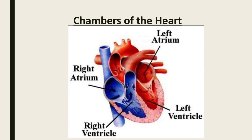Dear students, let's learn the chambers of the heart. The heart consists of four chambers. They are upper two auricles and lower two ventricles. They are right auricle, left auricle, right ventricle and left ventricle.